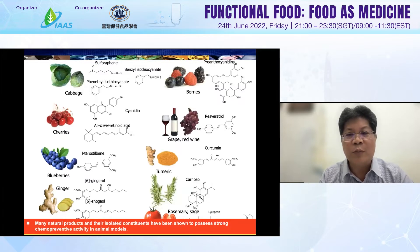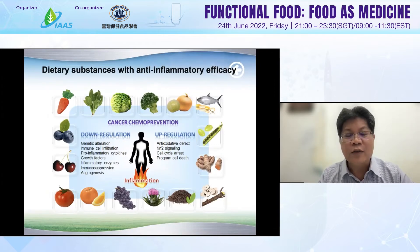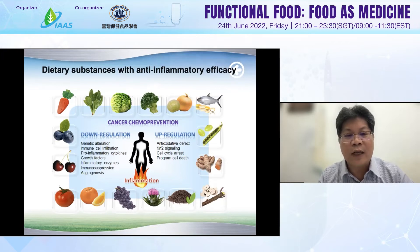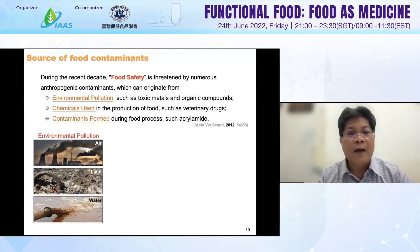This slide shows the dietary substances with anti-inflammatory advantages. Bioactive compounds can down-regulate or up-regulate different kinds of proteins or different kinds of signal transduction pathways. Down-regulation includes genetic alteration and immune inflammation, while up-regulation includes antioxidant defense and anti-inflammatory signaling pathways. We can also use bioactive compounds to induce cell cycle arrest or promote programmed cell death.